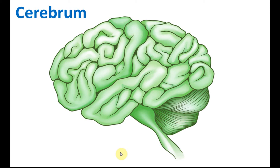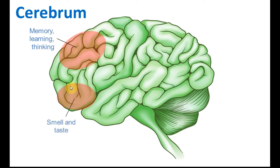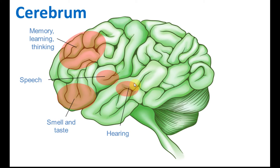For the cerebrum, it has a lot of functions and you need to know which part of the cerebrum carries what kinds of functions. For example, the front part of the cerebrum is responsible for memory, learning and thinking. And this part here is responsible for smell and taste. There's a small part here which is responsible for speech. And then here is for hearing — this is reasonable because our ear is around here.